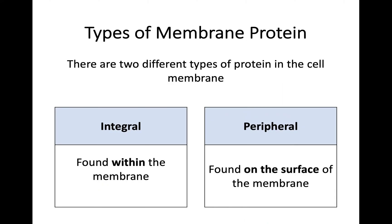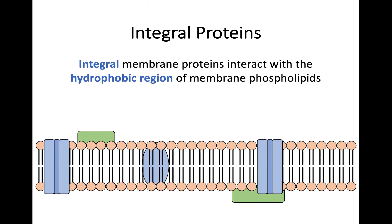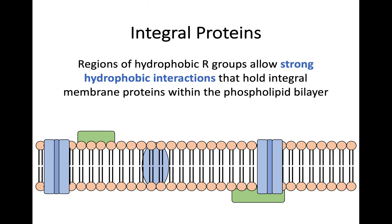In terms of these proteins, we have two different forms. We have integral proteins that are found inside and within the membrane, and we have peripheral proteins, which as the name suggests are found on the outside — they are bound to the surface of the membrane. So we'll start off by looking at these integral proteins. These are going to be within the cell membrane, so they interact with the hydrophobic region of the phospholipids. Hydrophobic R-groups are going to allow strong hydrophobic interactions that hold those integral membrane proteins within the bilayer itself.